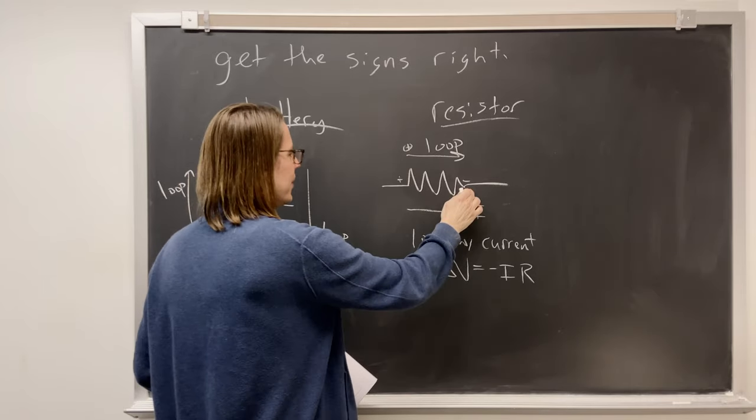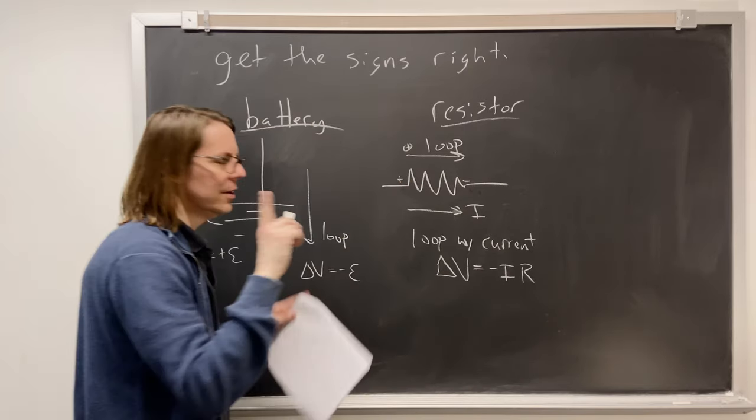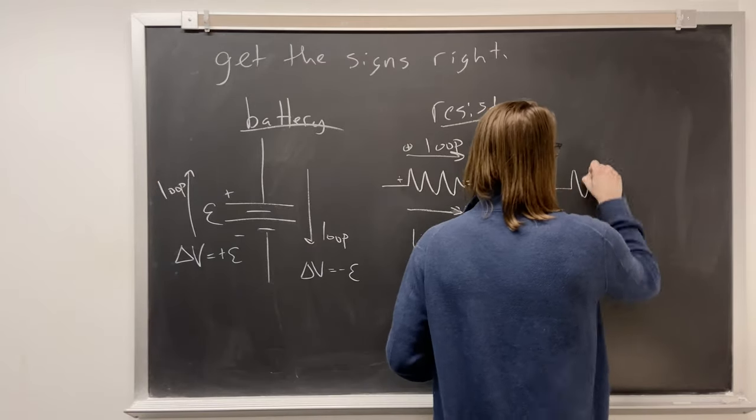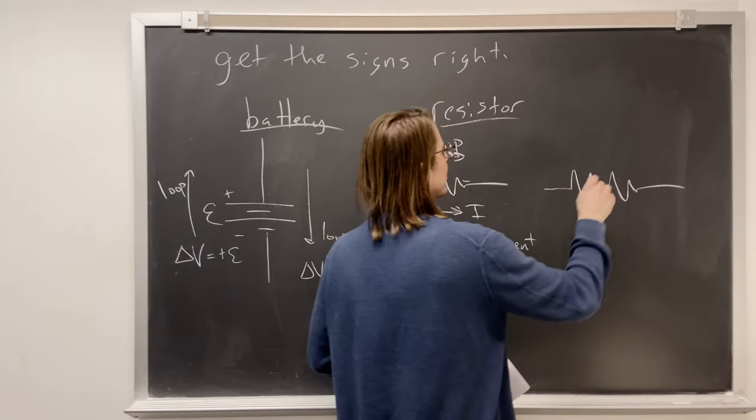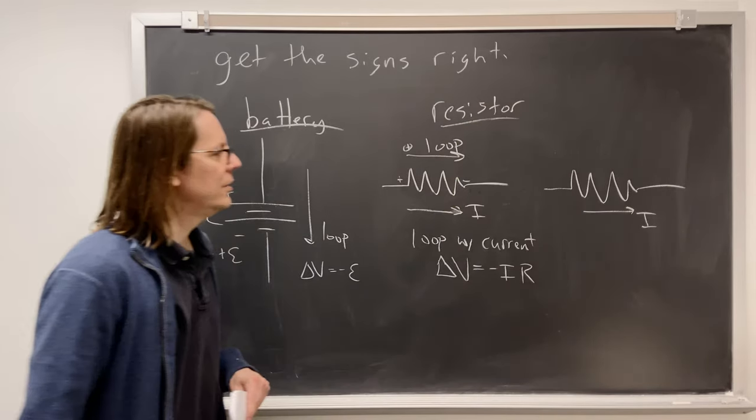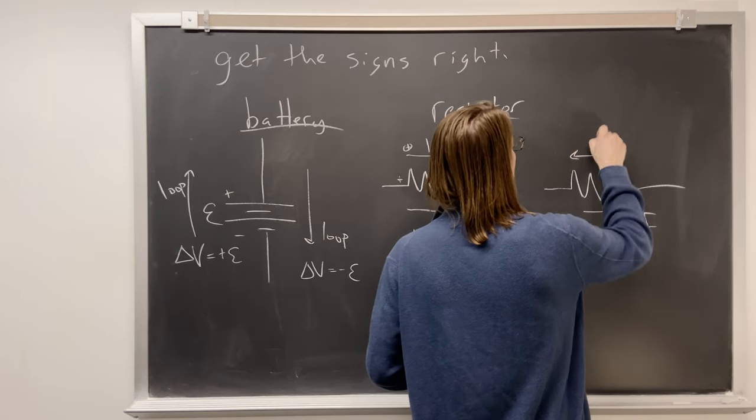The difference is final minus initial. Low minus high, negative. So when you loop with the current, the voltage drop is negative. But you can, because often when you set up a complex circuit, you don't actually know which way the current is going to go. So you guess a direction. And maybe you'll be doing some Kirchhoff loop where you loop against the current.